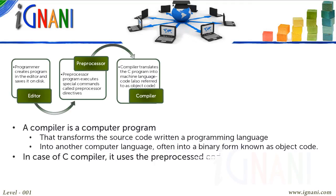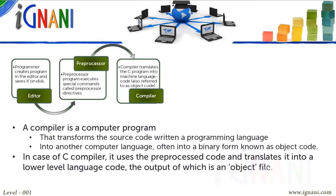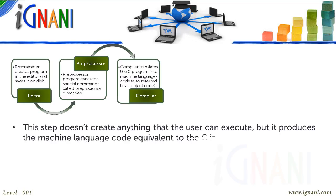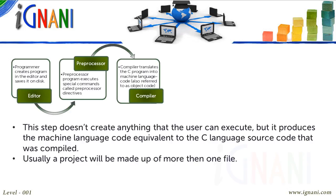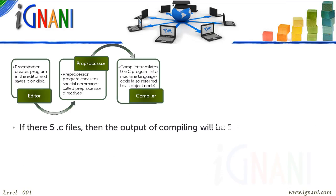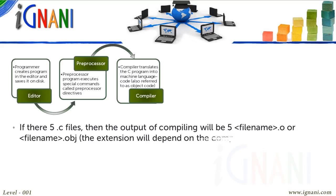In the case of the C compiler, it uses the pre-processed code and translates it into a lower-level language, the output of which is an object file. This step doesn't create anything the user can execute, but it produces the machine language code equivalent to the C source code compiled. Usually a project will be made up of more than one file — every .C file will have a corresponding object file created. For example, five .C files will produce five .O or .OBJ files, depending on the compiler used.